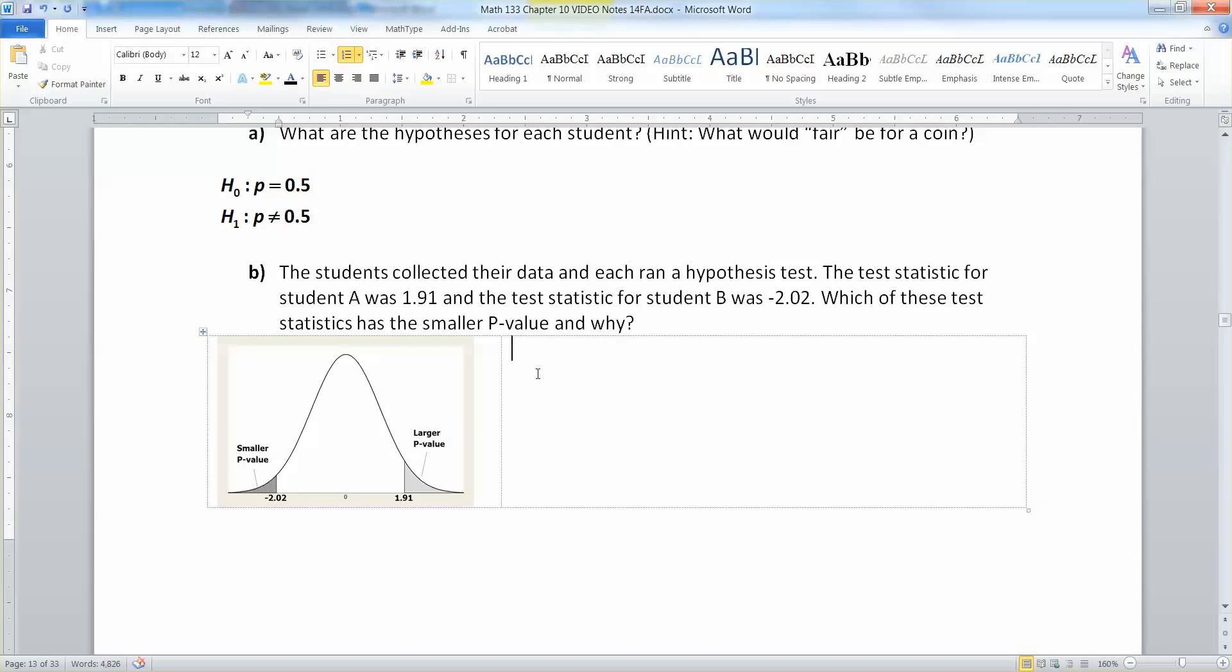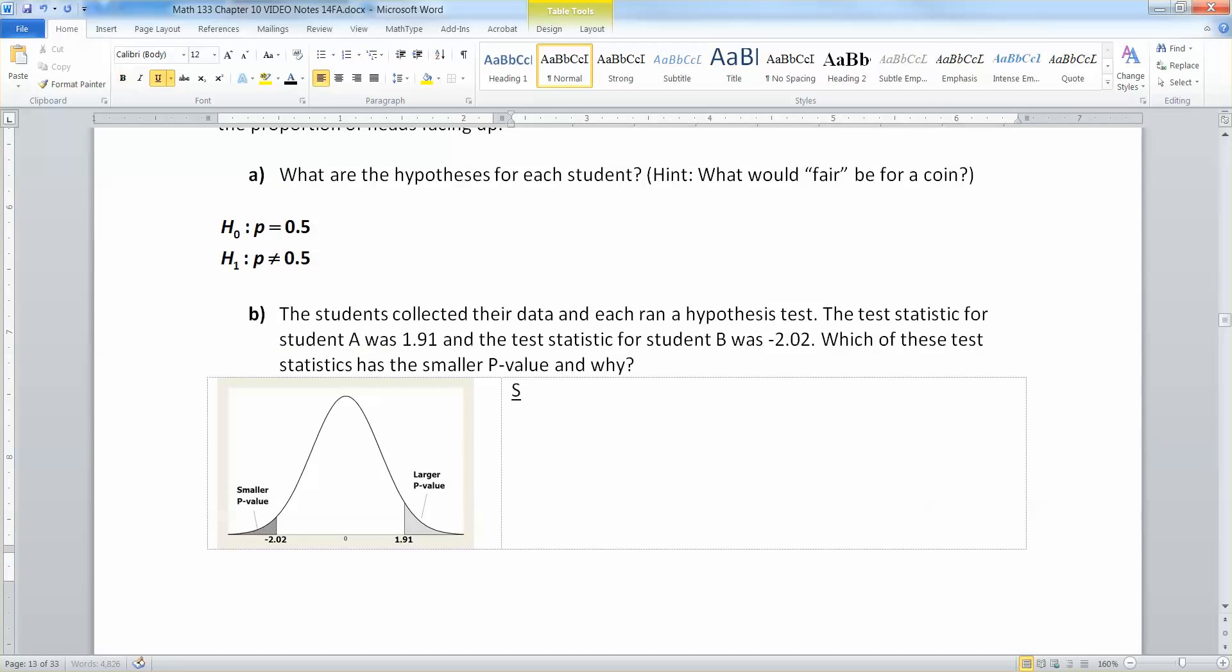So the one that's going to have the smaller p-value is student B.